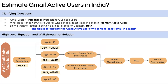You can always discuss these numbers with the interviewer, but the most important thing is to get the approach right. The remaining 20% of the population lies between ages 60–80, that's around 280 million. As discussed, we will ignore those below 15 and above 60.